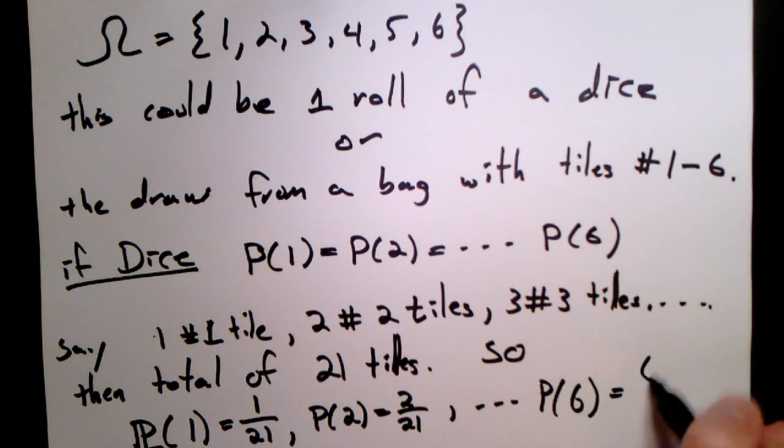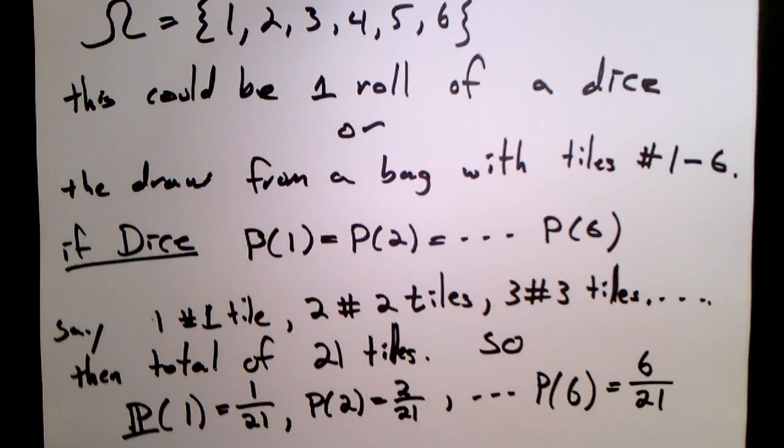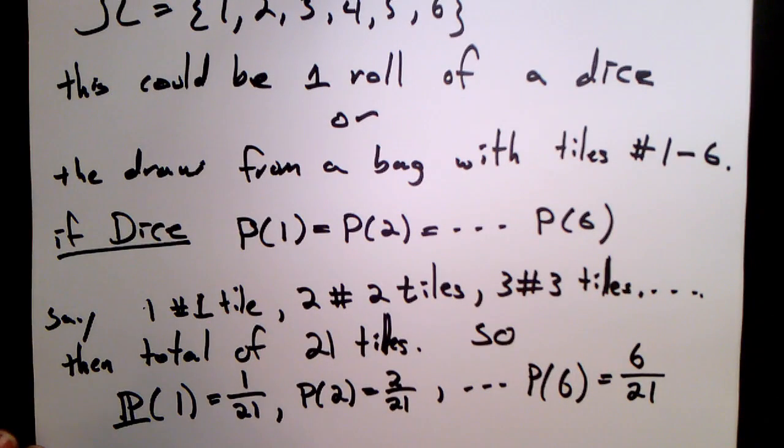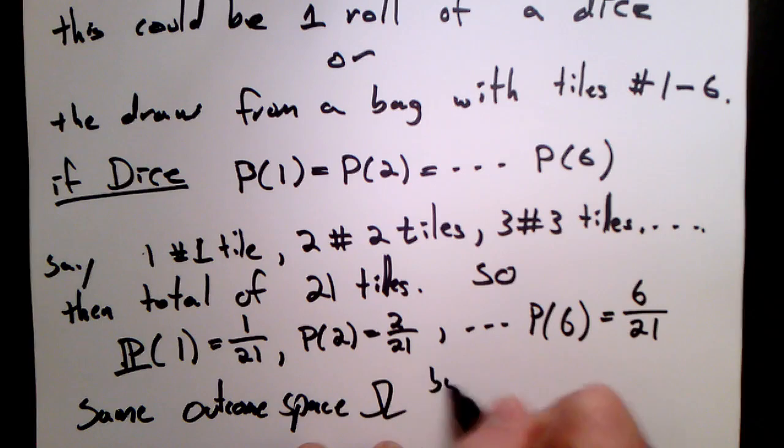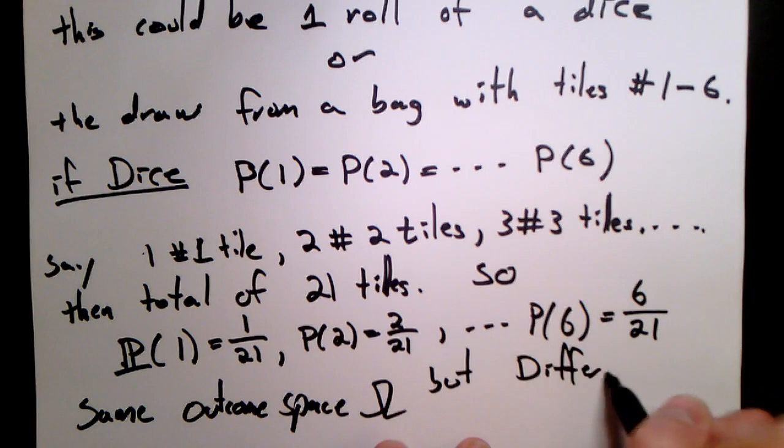So the distinguishing thing here is not the outcome space, but rather the probabilities. And this collection of probabilities is called the distribution. So in this case, we have the same outcome space, but different distributions.